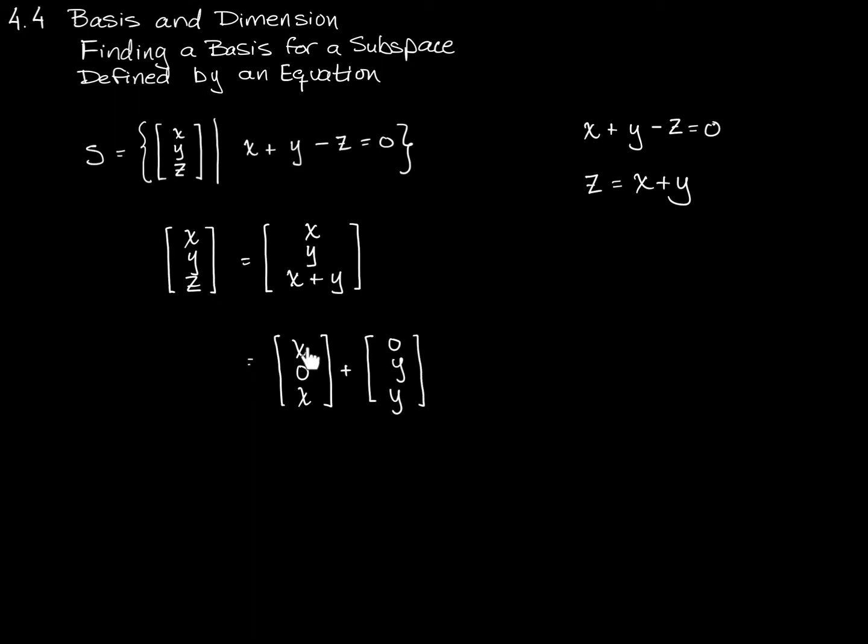Adding these two vectors together would give me x plus 0, which is x, 0 plus y, which is y, and x plus y, which is x plus y. And then if I factor out the common unknown value x, I get a vector 1, 0, 1 times x, which you might see as x times 1, 0, 1. And I get a vector 0, 1, 1 times y, which can also be written as y times 0, 1, 1.